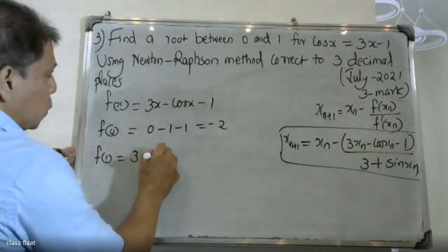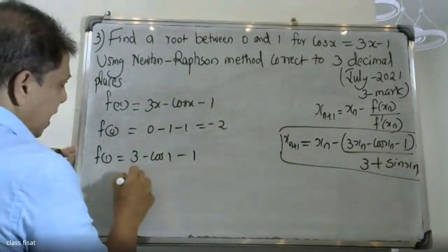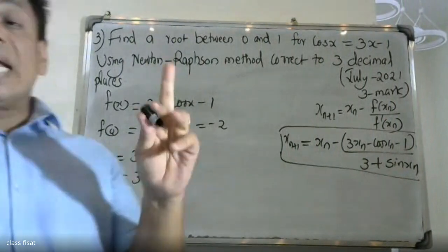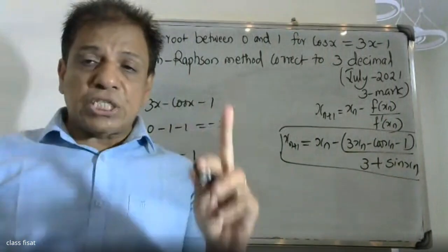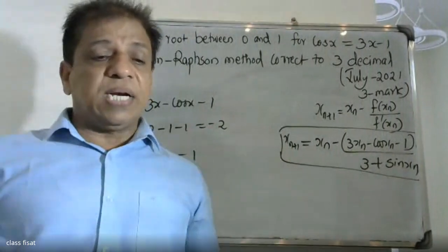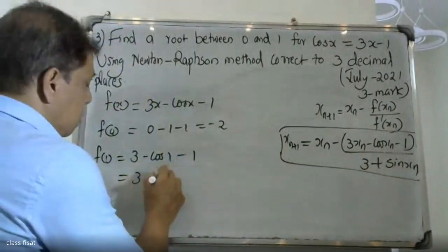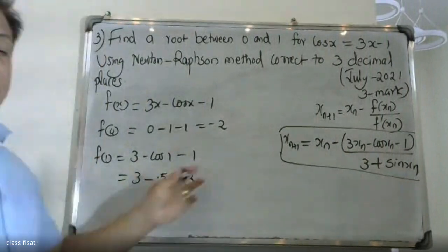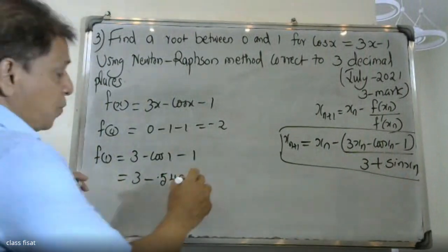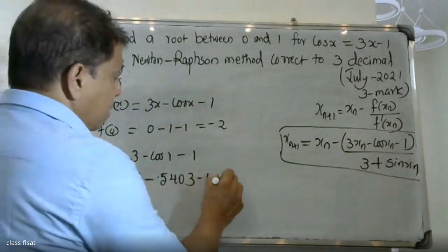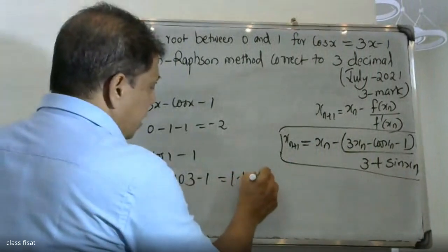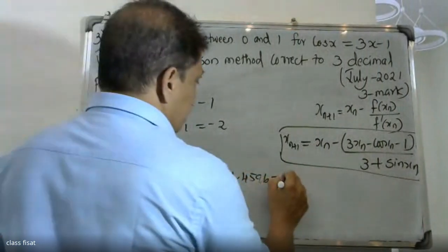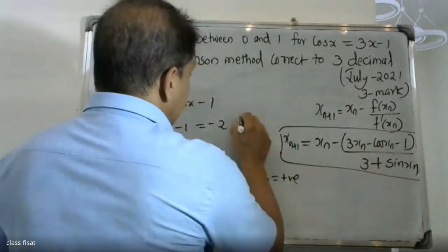We evaluate f at 0 and f at 1. For f(1): 3 minus cos 1 minus 1. Cos 1 in radians is 0.5403. So f(1) equals 3 minus 0.5403 minus 1, which equals 1.4596. This is positive, and f(0) is negative 1.